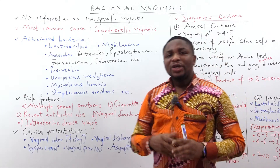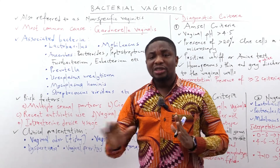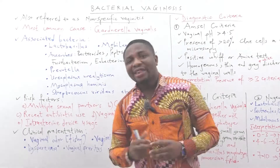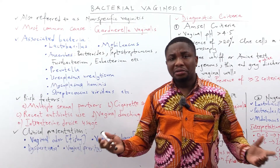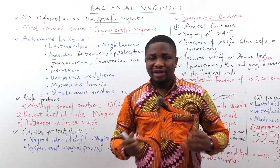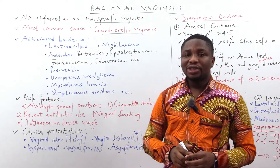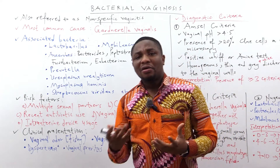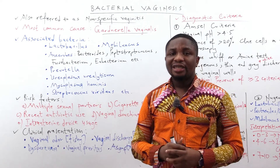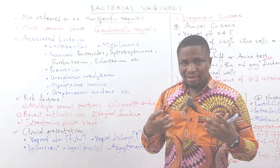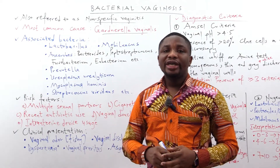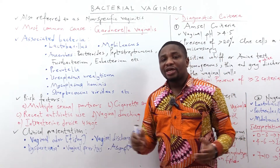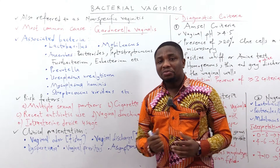The next risk factor is recent antibiotic use. Antibiotics create an imbalance in the normal vaginal microbiota — useful flora gets eliminated, giving the pathogenic organisms a foothold, which can cause bacterial vaginosis. Next is vaginal douching, which refers to using water or detergents to clean the vagina; this can introduce microorganisms from the vulva into the vagina. Finally, intrauterine device usage can also create a favorable microenvironment for organisms to proliferate.